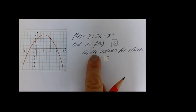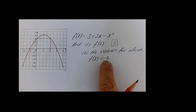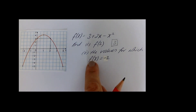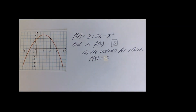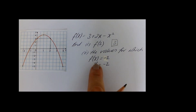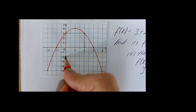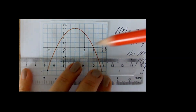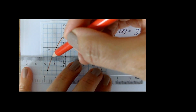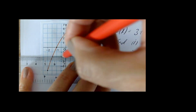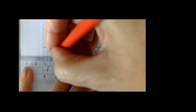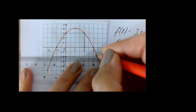Now we're going to look at finding the values for which f of x is equal to minus 2. When the function is equal to minus 2, remember that can be rewritten as y is equal to minus 2. Then we go to minus 2 on the y axis. This time we're going to draw a horizontal line and stop when you meet the curve. It meets the curve twice — here and here.